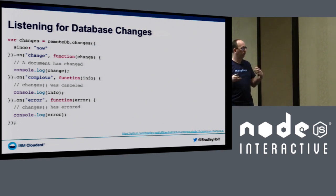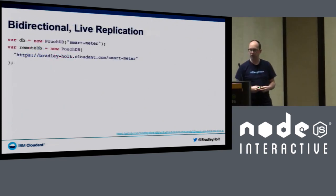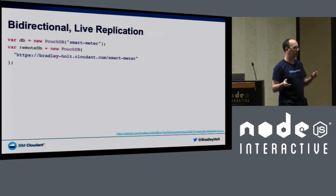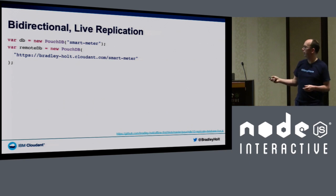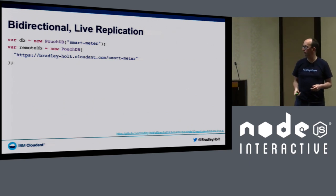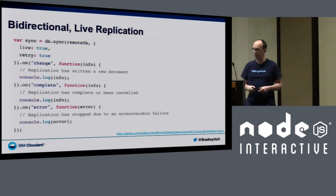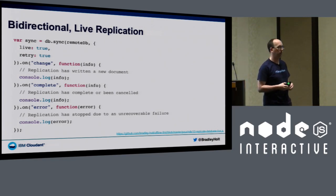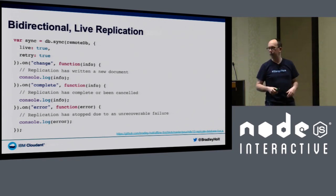You can listen for database changes and get live updates to your user interface based on changes in the database, with events triggered as data changes. For live replication, you can replicate between your local database and your remote database in real time. Set up a local database and a remote database, then call `db.sync()` to do a bidirectional replication — pulling data from remote to local and pushing from local to remote.